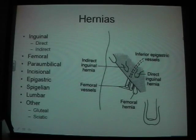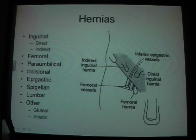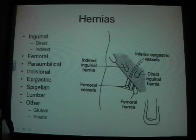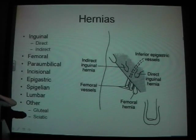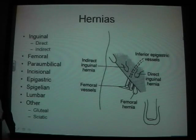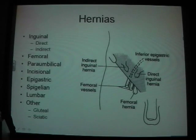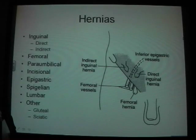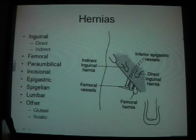To differentiate direct and indirect inguinal hernias: direct is medial to the inferior epigastric artery, through the posterior wall of the inguinal canal. Indirect is lateral to the inferior epigastric artery, passing through the deep and the superficial ring, and it can extend into the scrotum. A mnemonic: 'I like L' — Indirect is Lateral.